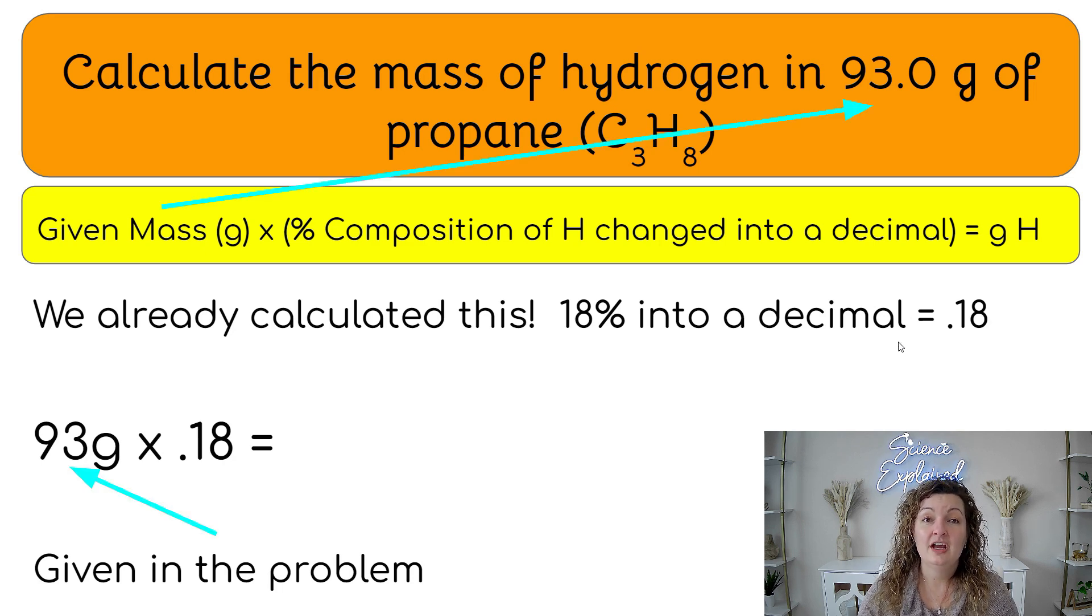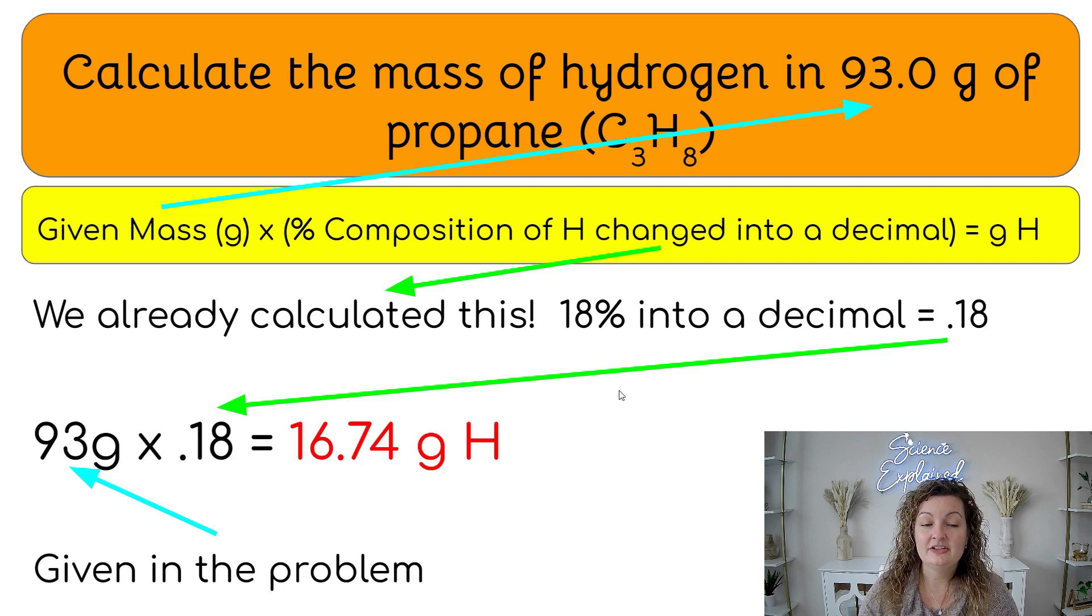We're using the number we were given in our word problem, which is our 93 grams again. And we're going to multiply that by our decimal, right? So that is 0.18 and we end up getting 16.74 grams of hydrogen.